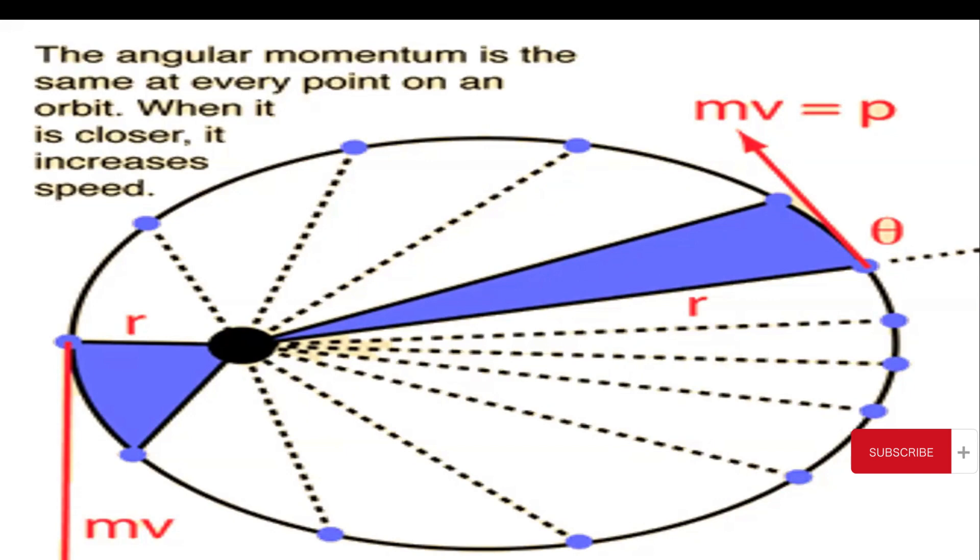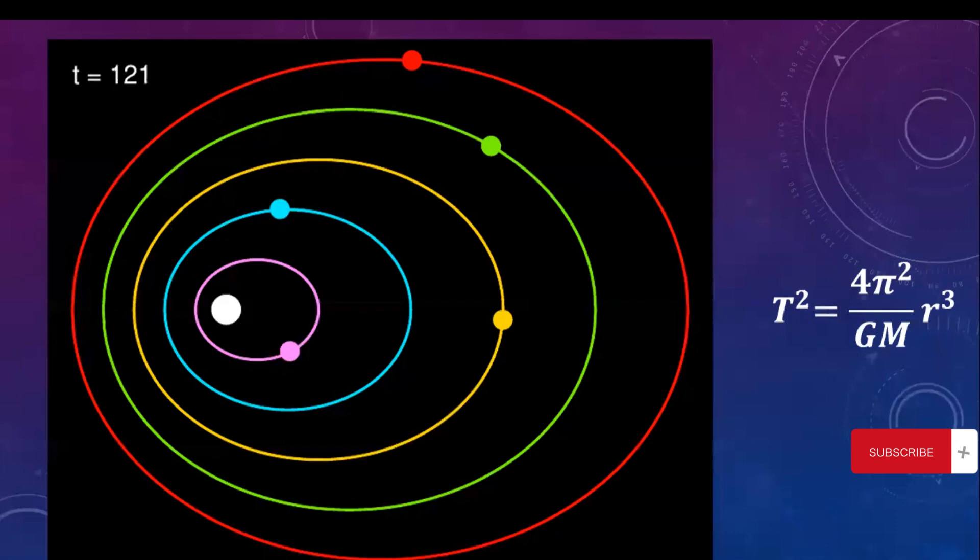Kepler's third law, known as the law of harmonies, establishes a fundamental connection between the orbital periods and the distance of the planet from the sun. It can be mathematically expressed as T² is directly proportional to r³. The law implies that the square of the orbital period of two planets is equal to the ratio of the cube of the average distance from the sun.